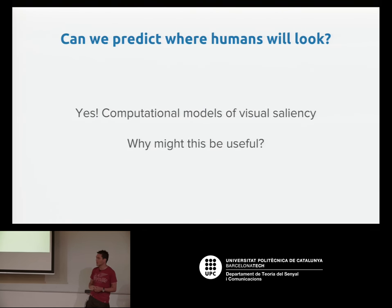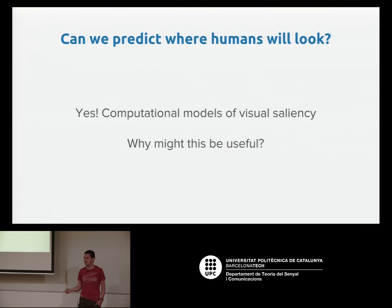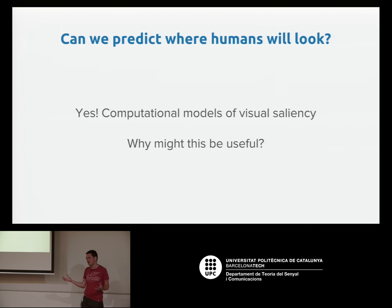A question that might come up is: if people reliably look in the same place, is there some way of predicting where they look? Can we model it? People have been trying to do this for a while with lots of different approaches. Deep learning approaches predictably seem to work best, and people have started doing this in the last couple of years. So yes, we can model this pretty well. But if we have a model, why is that useful? I'll talk about some applications later.